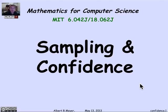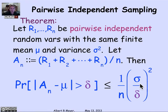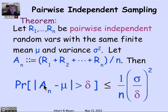Let's work out an example that shows how to use the pairwise independent sampling theorem to actually do some sampling and estimation. The basic theorem says that if we have n pairwise independent random variables with the same mean and variance, and we look at their average, the probability that their average differs from the mean by more than a given tolerance delta is less than or equal to the standard deviation over delta squared times 1 over n. This is what allows us to calculate the degree of confidence we can have given n, or the n we need given how confident we want to be.